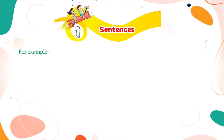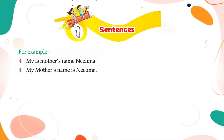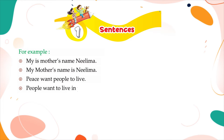For example: 'My is mother's name Neelima' is incorrect. The correct sentence is 'My mother's name is Neelima.' Similarly, 'Peace want people to live' is incorrect. The correct sentence is 'People want to live in peace.'